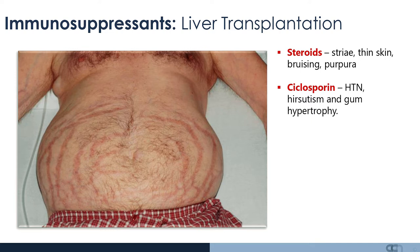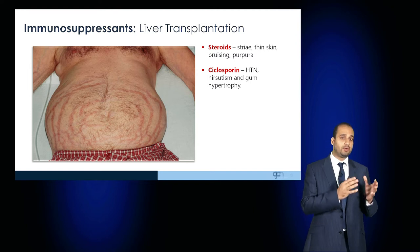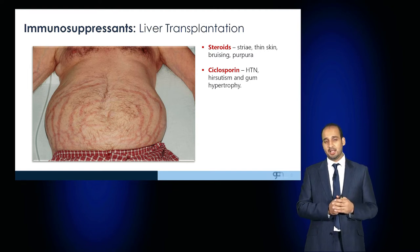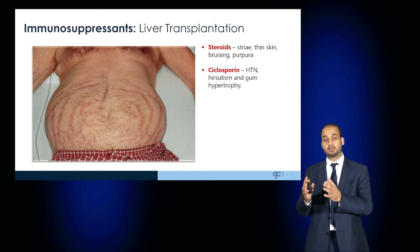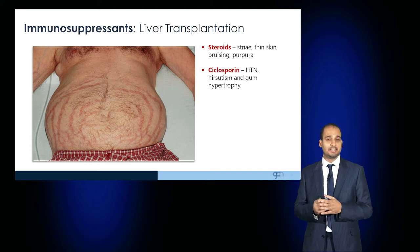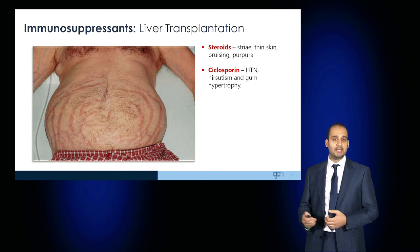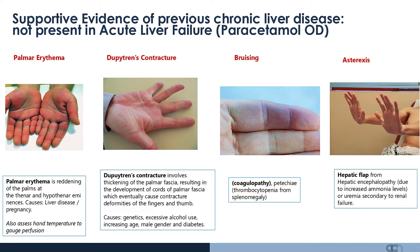Liver transplantation may be as a result of an acute drug overdose such as paracetamol, but could also be given as a result of chronic liver disease. If the patient had chronic liver disease, you would expect a number of other clinical signs, including in the hands: palmar erythema, Dupuytren's contracture, bruising, or previously asterixis, which you hope would have abated with a liver transplant.